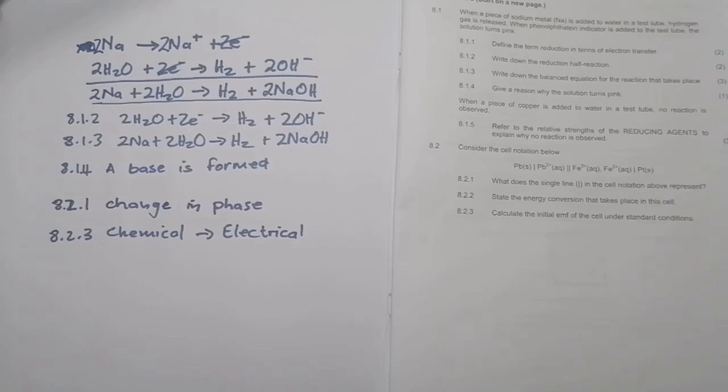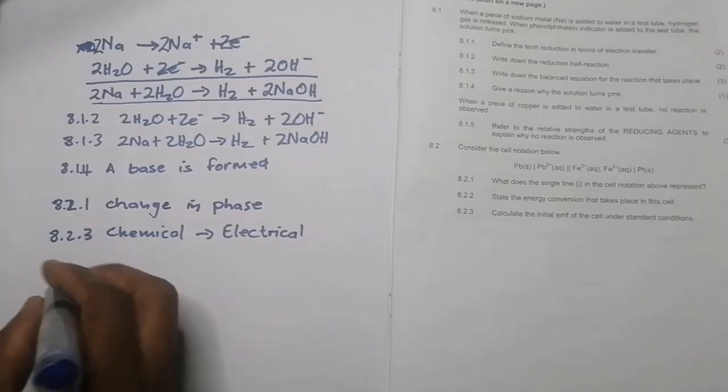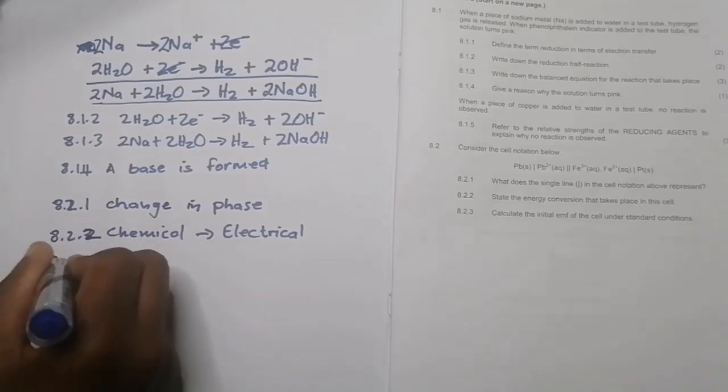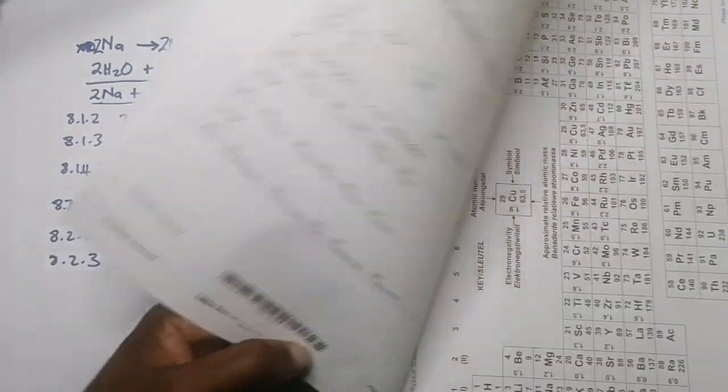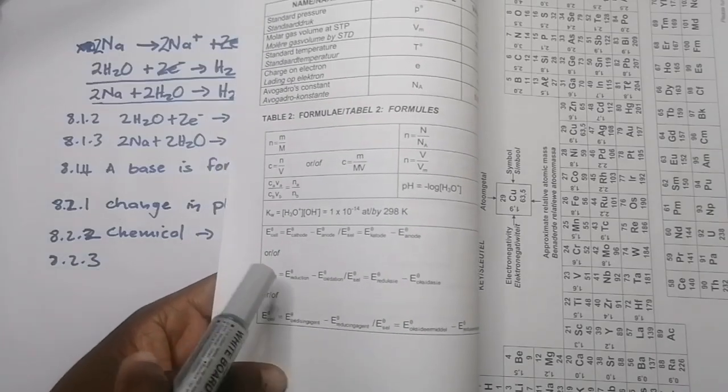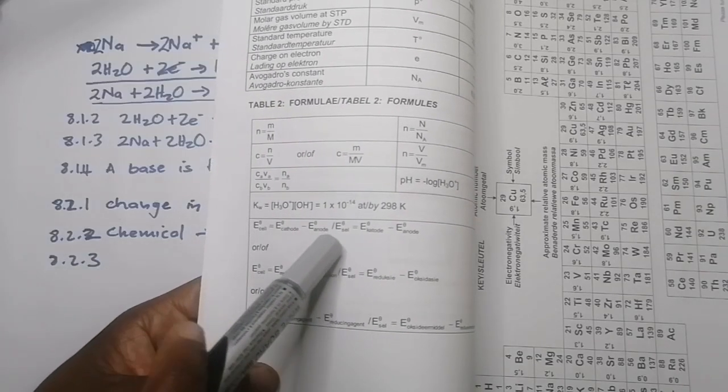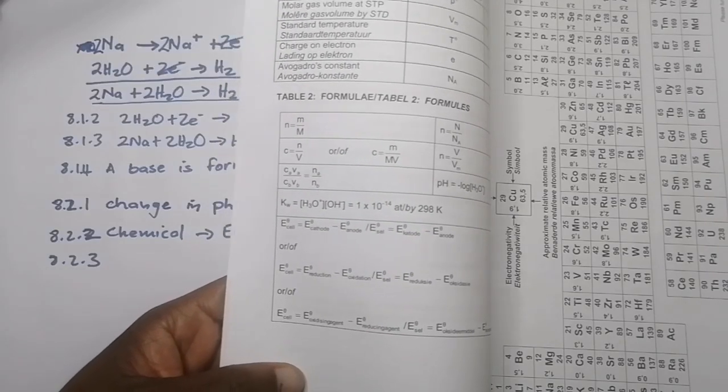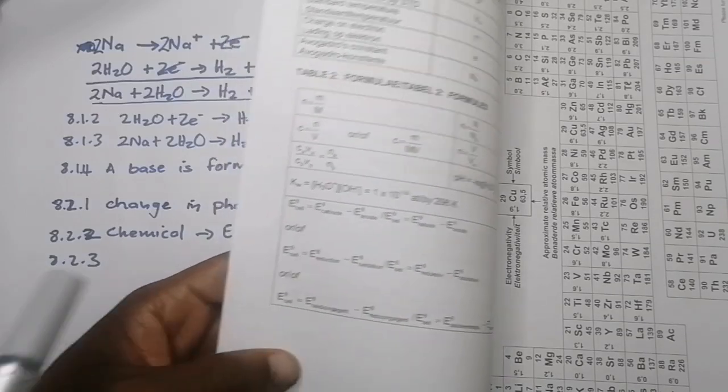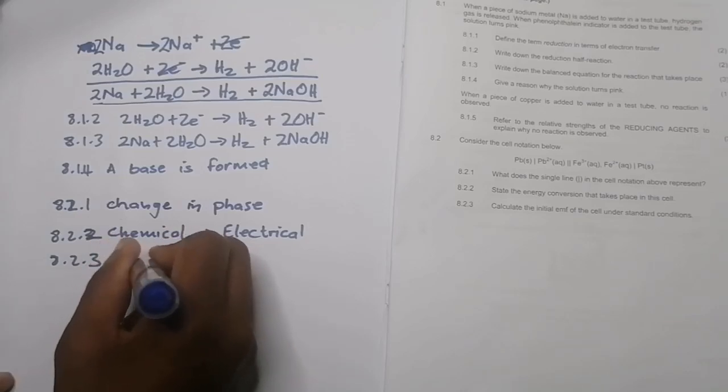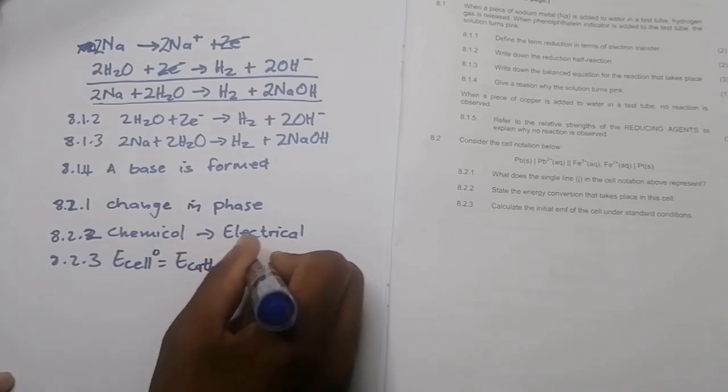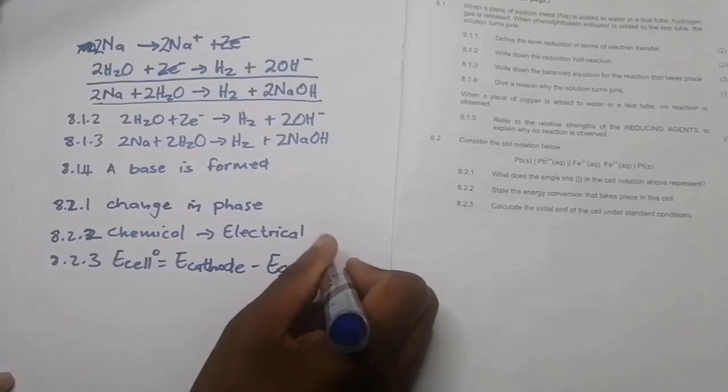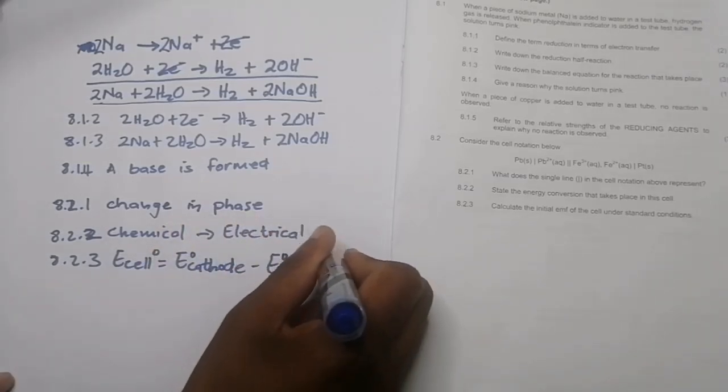And then they say calculate the EMF of the cell under standard conditions. Now, please just keep in mind when you calculate the EMF, please just use the formulas that are given right at the back. So there you have them there. So that's E cell. It's E cathode minus E anode. Please don't abbreviate them. Apparently examiners don't take too well on that one. So E cell is equals to E cathode minus E anode. So we're going to say E cell is equals to E cathode minus E anode. Remember it's standard. E standard, E standard, E standard there.